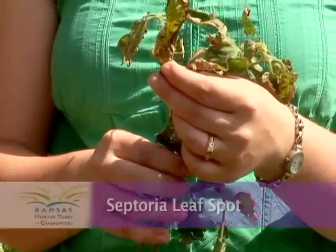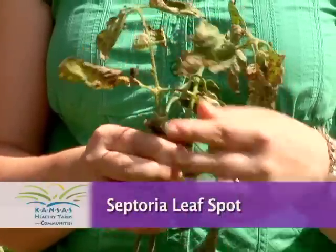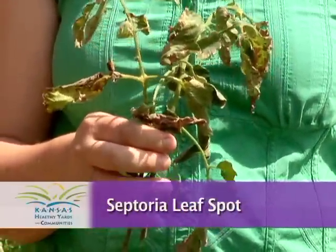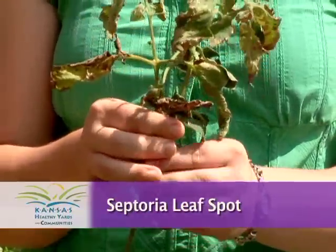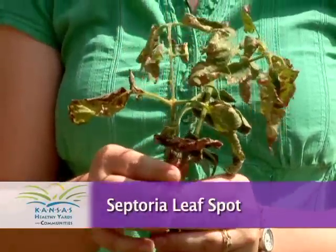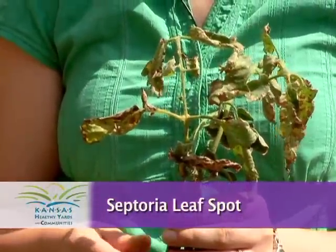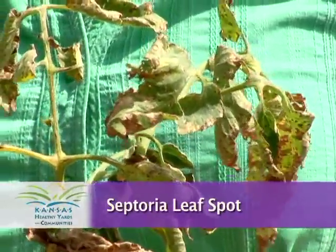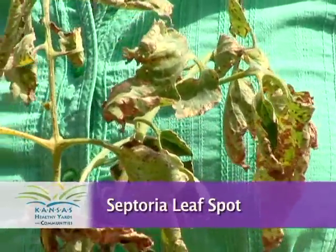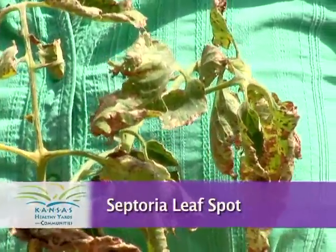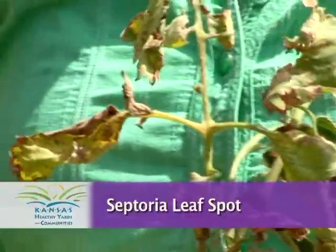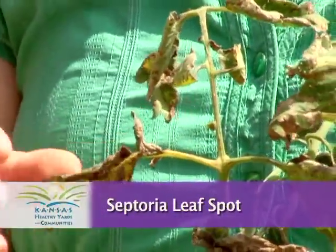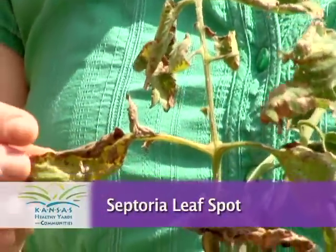This is a fungal disease called septoria leaf spot, characterized by tiny brown spots all over the leaves. Usually the leaves will start turning yellow, and it typically starts from the bottom of the plant and works its way towards the top. It's usually caused by high warm temperatures and high humidity, which we have a lot of in Kansas in the average summer.